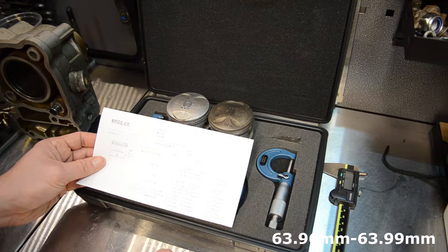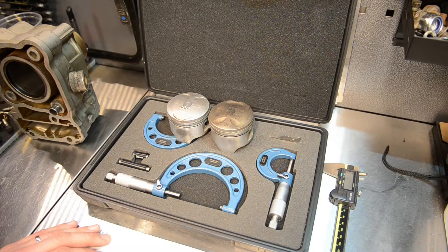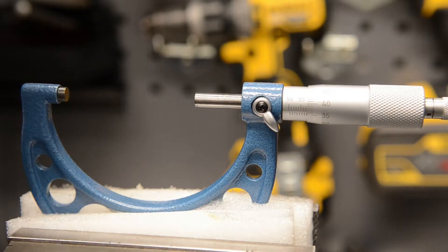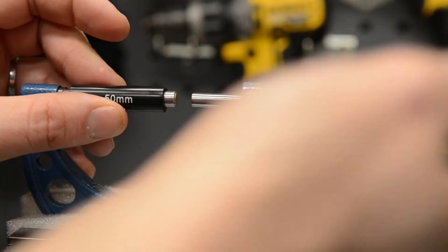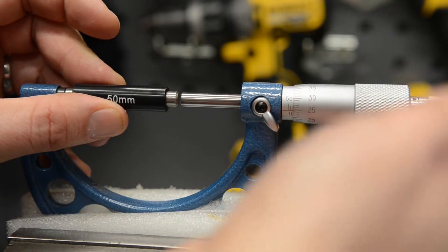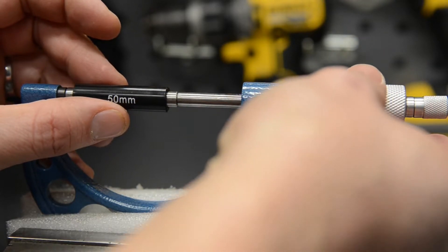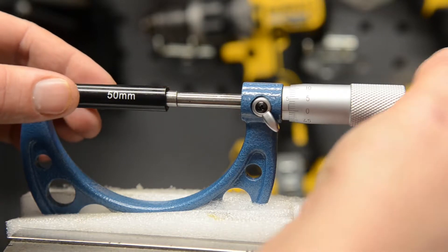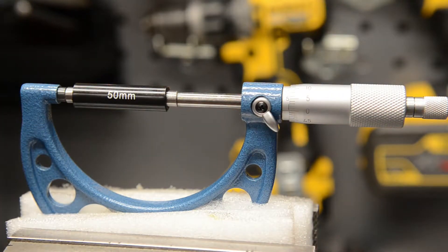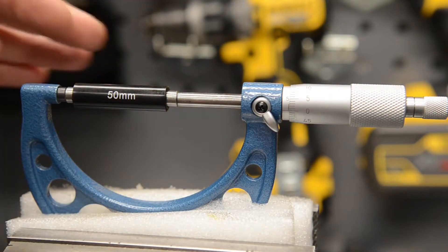I'm going to be using the 50 to 75mm micrometer. First things first, I'm going to make sure this is zeroed out. I'll put my bar in, spin the thimble until I start getting resistance. Okay, it's holding there now. For me, I can see it's exactly zero.